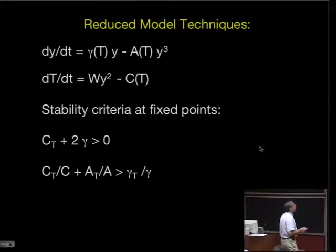If I use this as a stand-in for a more complicated disk, this has a lot of features which are similar to disks. What are its stability properties? I recover something that looks rather like a classical Field criterion. And then I have a second criterion for stability. CT is a partial derivative with respect to temperature for the A coefficient and the C coefficient.